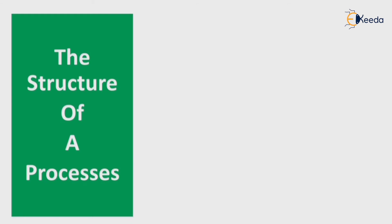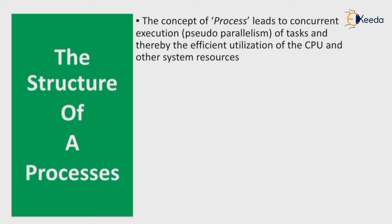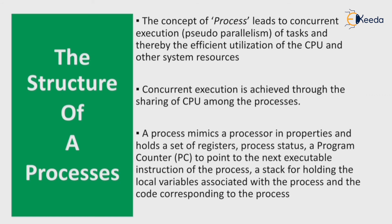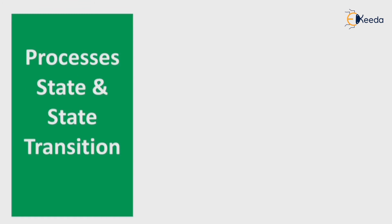The concept of a process leads to concurrent execution or pseudo-parallelism of tasks, enabling efficient utilization of the CPU and other system resources. Concurrent execution is achieved through sharing of the CPU among processes. A process mimics a processor in its properties and holds a set of registers, a program counter to point to the next executable instruction, and a stack for holding local variables associated with the process, along with the corresponding code.